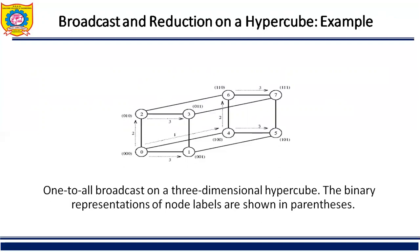Unlike linear array, the hypercube broadcast will not suffer from congestion if node zero starts out by sending the message to node one in the first step, followed by nodes zero and one sending messages to nodes two and three respectively, and finally nodes zero, one, two, and three sending messages to nodes four, five, six, and seven respectively. So this is an example of broadcast and reduction on hypercube where one-to-all broadcast on three-dimensional hypercube.